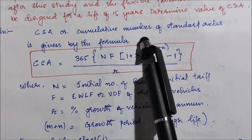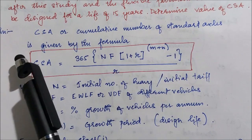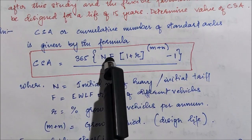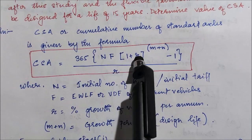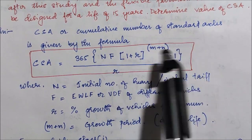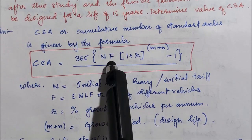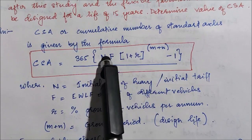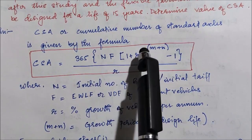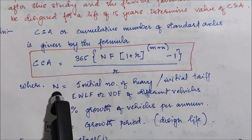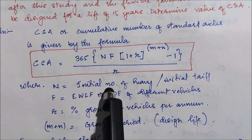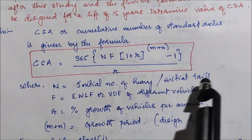The cumulative number of standard axles is given by the formula: CSA equals 365 into N, F, into [(1 + r)^(m+n) − 1] divided by r. Now let's see what the notations mean — N, F, r, m, and n — where N represents the initial number of heavy vehicles or the initial traffic.